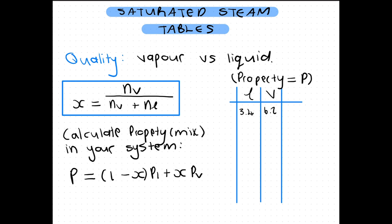If the phase is only liquid your quality would be zero and we would look only at the liquid property column. If the phase is only vapor the quality is one and we look only at the vapor property column.